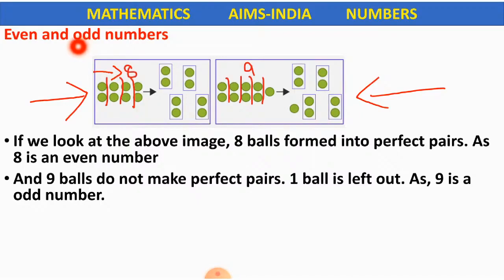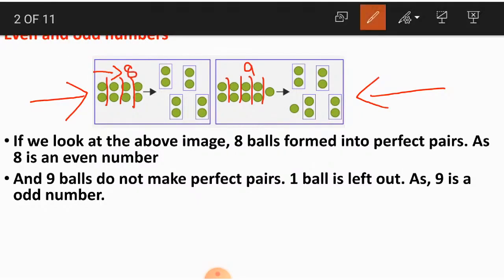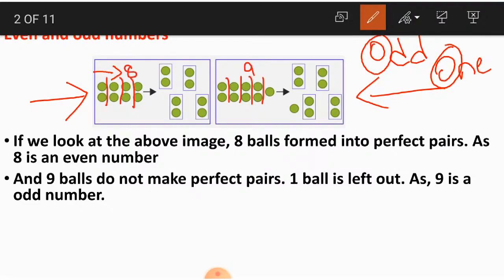What does the word odd start with? Odd starts with the letter O. Yes or no, children? Odd starts with the letter O, and even the number 1 starts with the letter O. So odd numbers leave one ball or thing or number behind — they do not form perfect pairs.